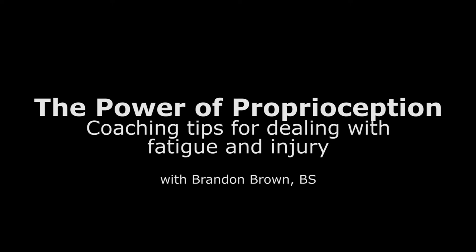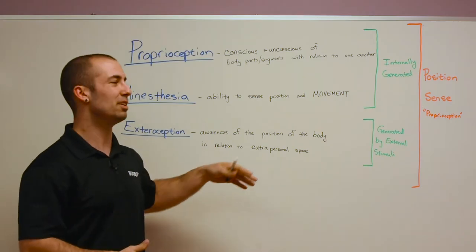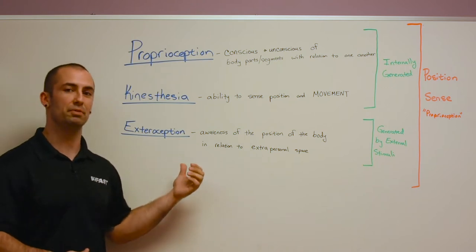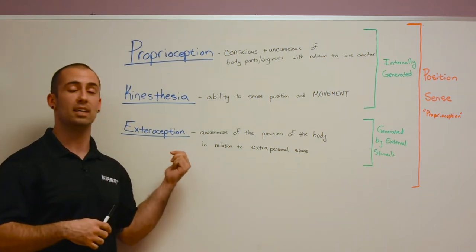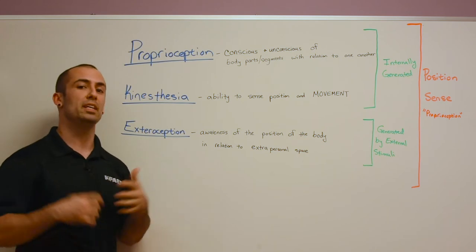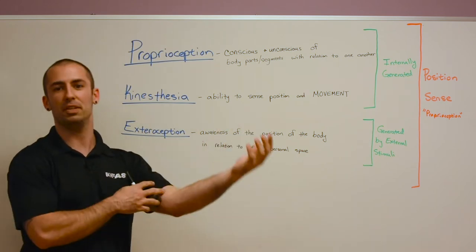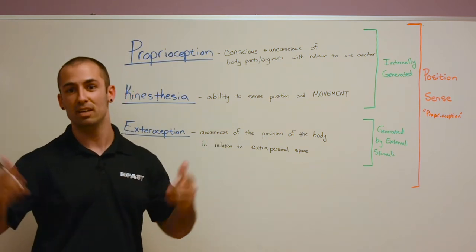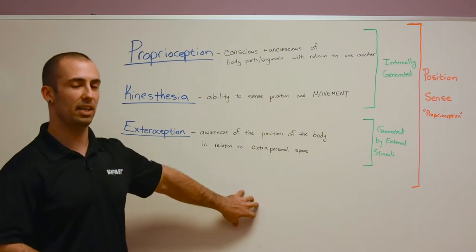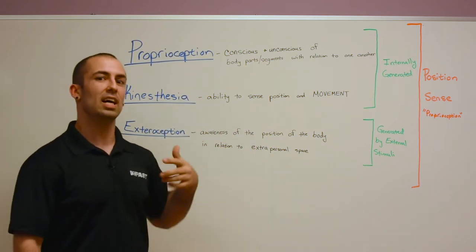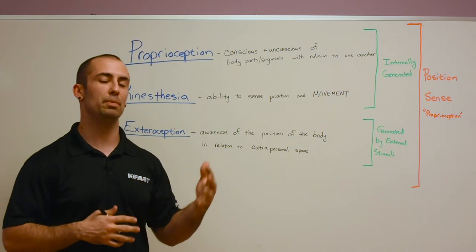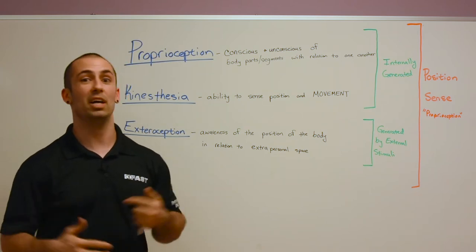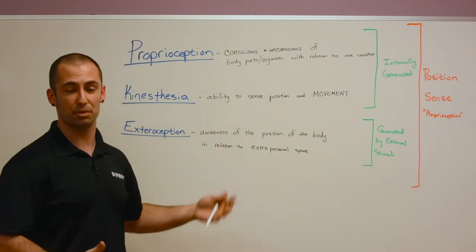Hey guys, this is Brandon with iFast University. We've been putting out more content, getting into neuroscience and physiology. Throughout undergraduate, we hear about proprioception — you have muscle spindles, they detect length changes, and you know where you are. It's actually a little more than that. Today we'll define some things and then apply them to teaching exercises, injury, rehab, and how we can take advantage of the different parts of proprioception.